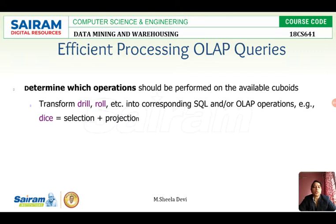If we know how to efficiently process OLAP queries, the response time and computation time will be less. There are two ways suggested for efficient processing of OLAP queries. The first one is to determine which operations should be performed on the available cuboid — what type of operation should be performed on the cuboids.